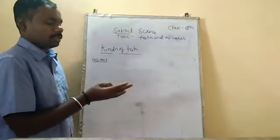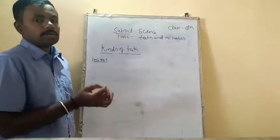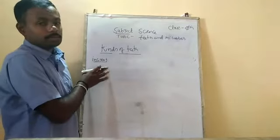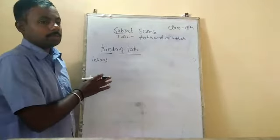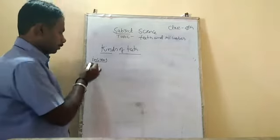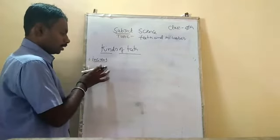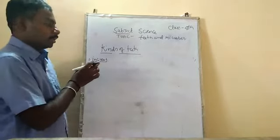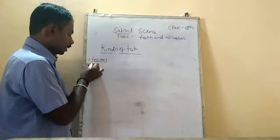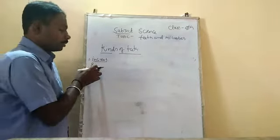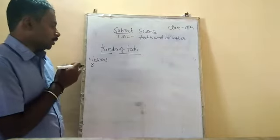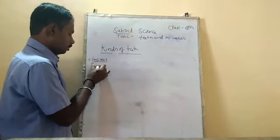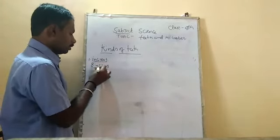The first one is the incisors, canines, premolars, and molars. In this class, we will learn how many of each kind of teeth are present and what their function is. The incisors are the teeth present in the front of our mouth. There are eight incisors in total.